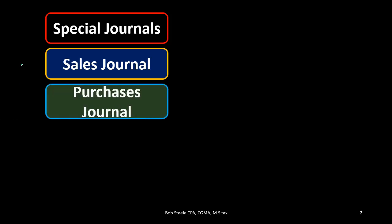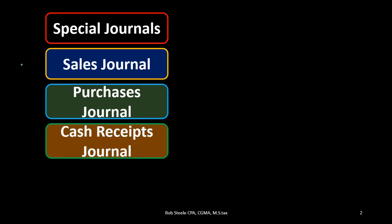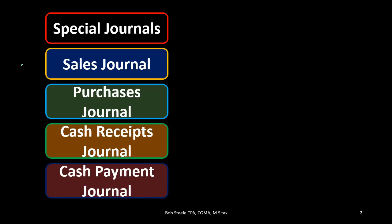The types of special journals will typically be a sales journal — we're going to group sales transactions into the sales journal. Then we have the purchases journal, where we group items when we make purchases. The cash receipts journal covers any transaction where we receive cash, where cash is going up. And then the cash payments journal covers any time cash is going down — when we have cash payments.